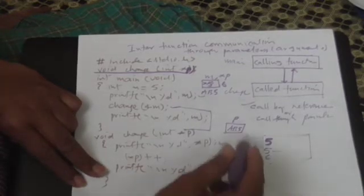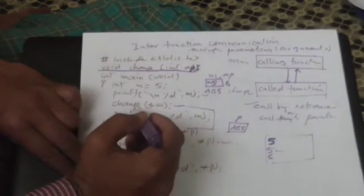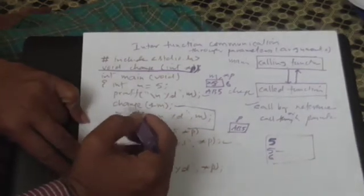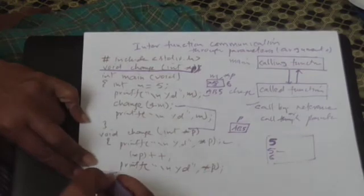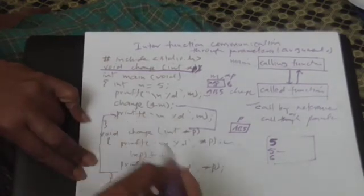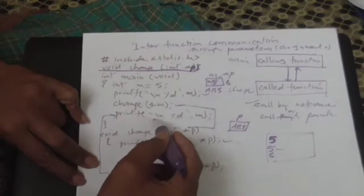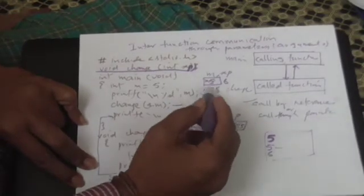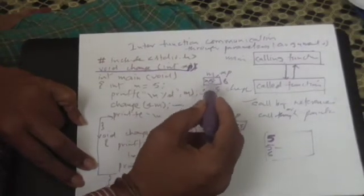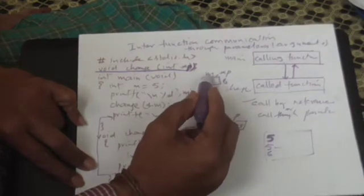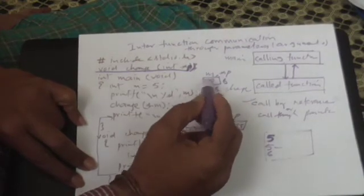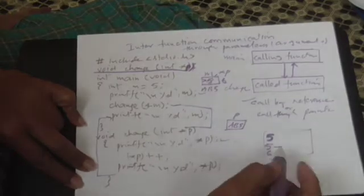Therefore, your control will return back to the statement following this change. So the next statement, after this, it comes here. So you are saying printf percentage d m. So the same location has two different names. Both are same. Therefore, the value of m, it prints 6.